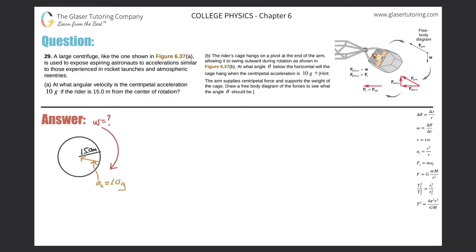Number 29. A large centrifuge, like the one shown in figure 6.37a, is used to expose aspiring astronauts to accelerations similar to those experienced in rocket launches and atmospheric re-entries. Letter A: at what angular velocity is the centripetal acceleration 10 g's if the rider is 15 meters from the center of rotation?